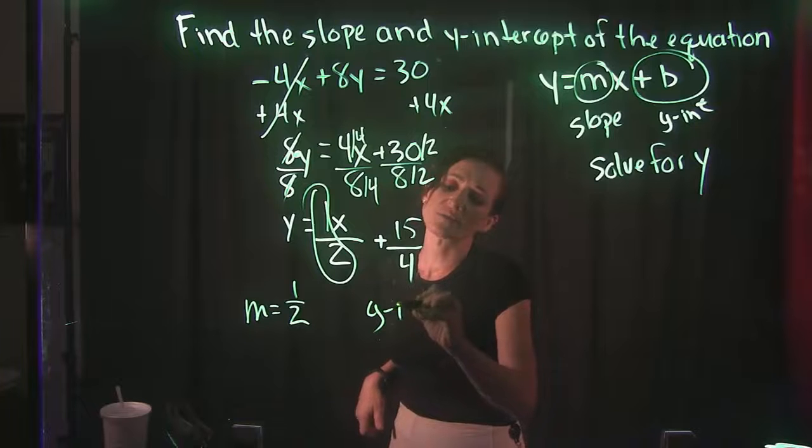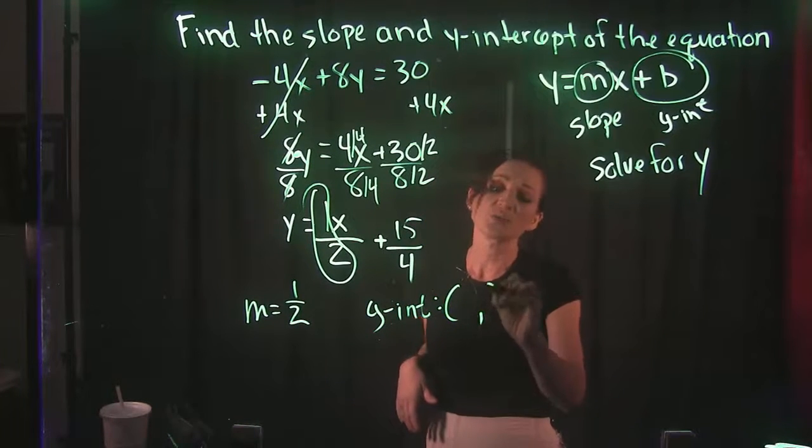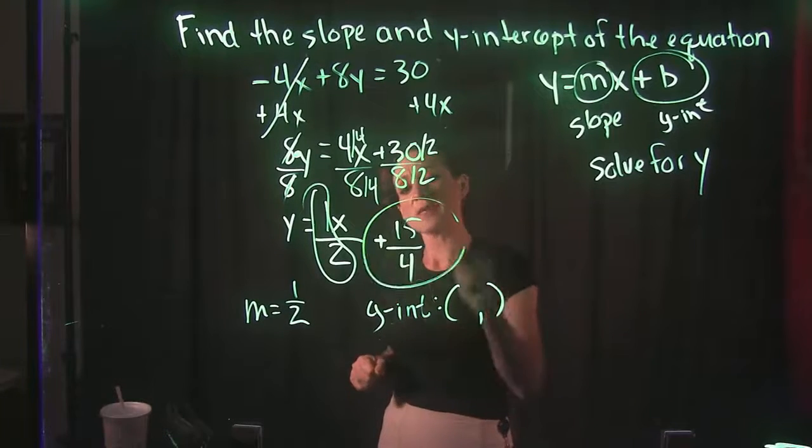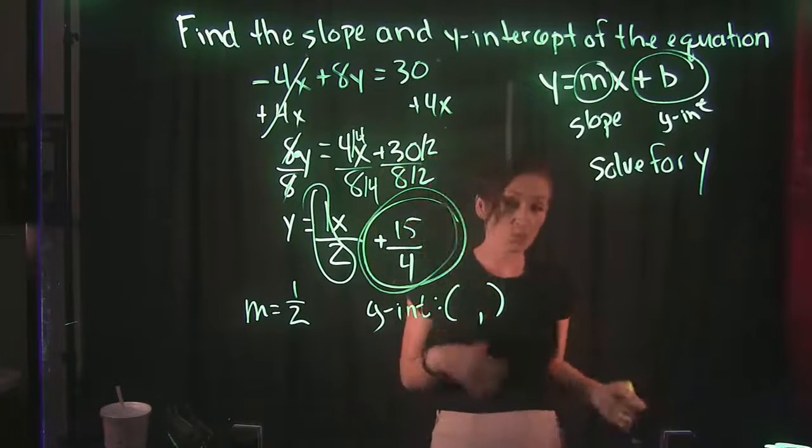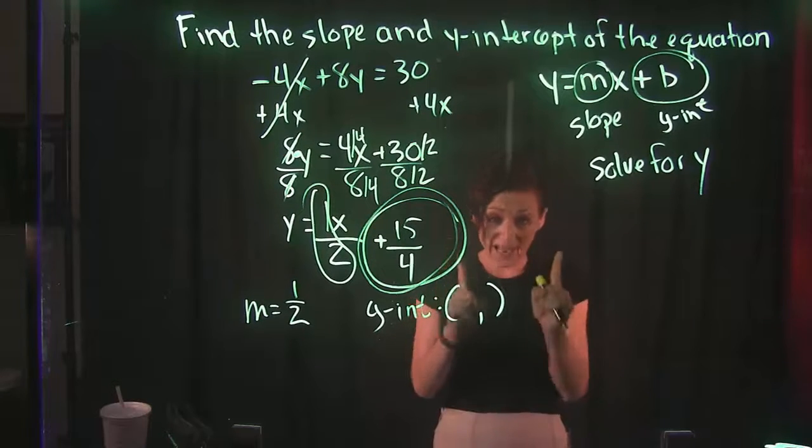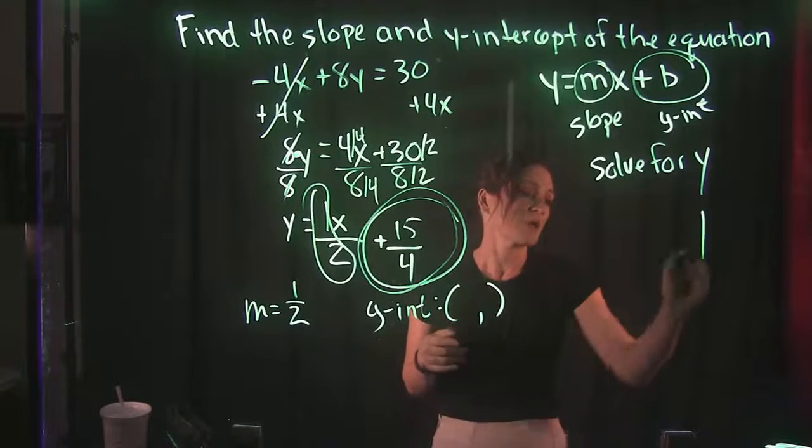Now our y-intercept, we need to keep in mind that a y-intercept is a point. So we need to have an x and a y-value. Now this plus or minus number back over here represents our y-intercept. It represents the y-value for our y-intercept.